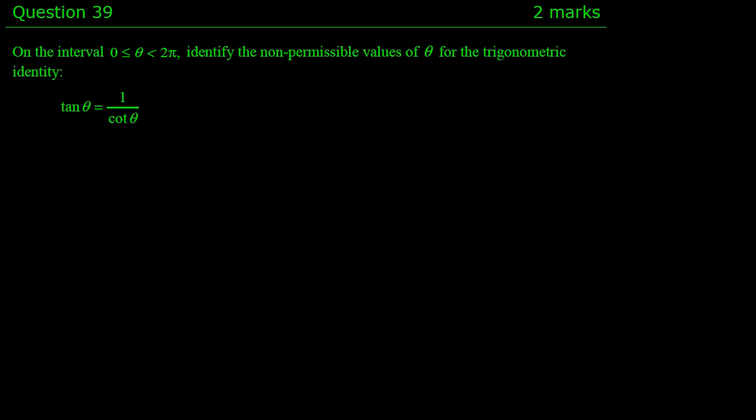Probably the easiest way is to change this to primary functions. So I'm going to look at the left-hand side first, and we'll get the non-permissible values for the left-hand side. So when we look at the left-hand side, tan θ can be written as sin θ over cos θ.